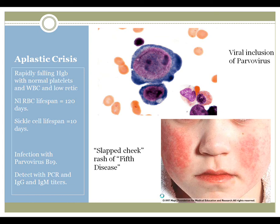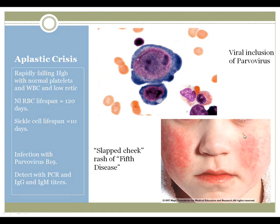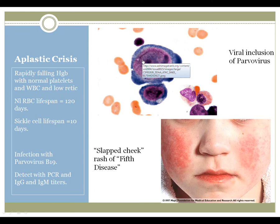Aplastic crisis is created by this virus, famously known for causing fifth disease. You see this child here with a red rash on her cheeks looking as if someone had slapped her. On the top picture you see the viral inclusions in the erythroblasts.